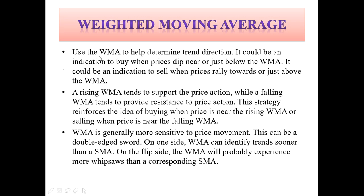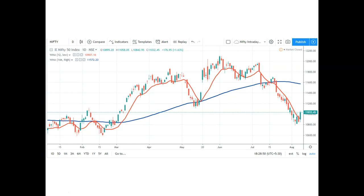Using the weighted moving average you can determine the trend direction. It can be an indication to buy when the prices dip near or just below the weighted moving average, and an indication to sell when the prices rally towards or just above the weighted moving average. You can use crossovers with the candlestick as signals. Here is an example of a selling point on the chart.